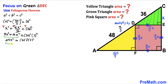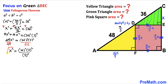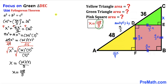Dividing both sides by 25 to isolate x², we get x² = (36² × 3²) / 5². Taking the square root of both sides: x = (36 × 3) / 5 = 108/5. So x = 108/5, found just by analyzing the green triangle.